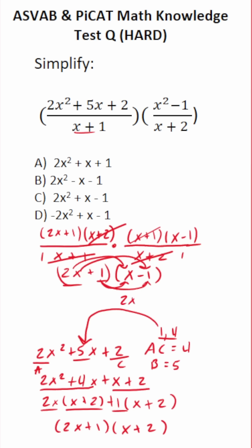2x times x is 2x squared. 2x times negative 1 is negative 2x. 1 times x is just plus x. And then 1 times negative 1 is negative 1. Let's simplify that. This is 2x squared. Negative 2x minus x is minus x. And then we just have negative 1. So this is our answer, 2x squared minus x minus 1. You can see that that is answer choice B.